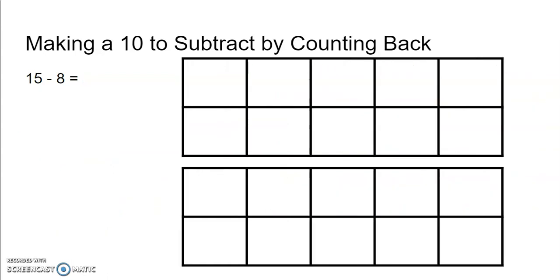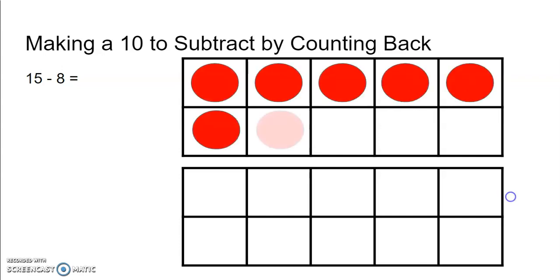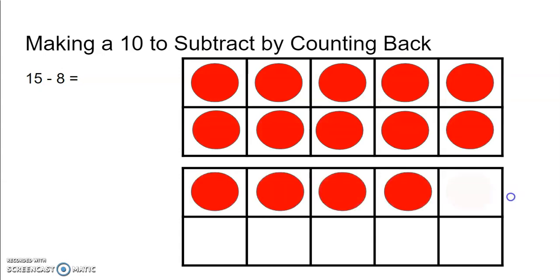Another way to think about making a 10 to subtract is by counting back, and you'll do that by starting with 15 in the 10 frames. So now I ask myself, how many do I subtract to get to a 10? I still have the goal of making a 10. And so I'm going to cross out circles until I get to where there's only circles in the top 10 frame.